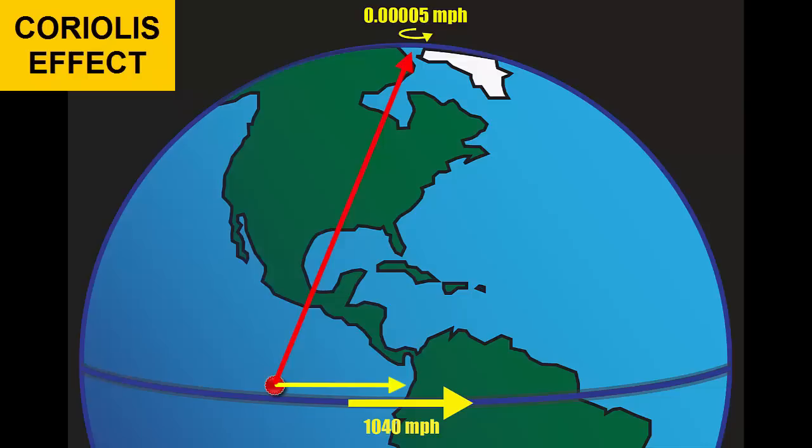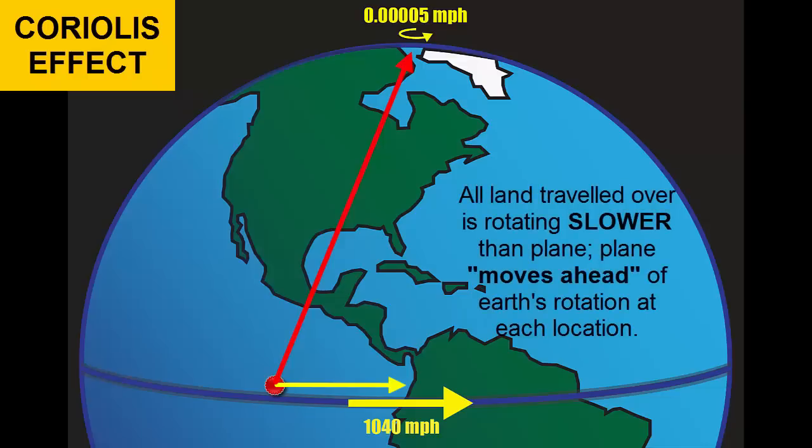However, it will travel over latitudes that are rotating more slowly. So its net motion will appear to be not just north but also east. In reality, the ground below it is moving east at a slower rate than the plane is.